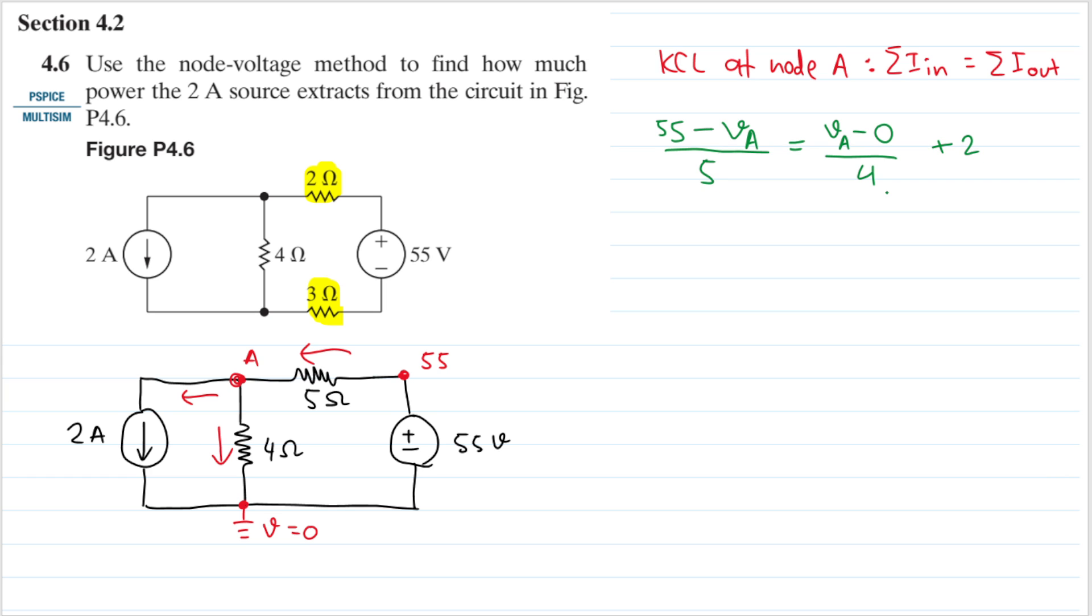I think I want to get rid of this 5 and 4, so we can multiply this by 20. On the left hand side we will have 4 multiplied by (55 minus VA). And VA minus 0 is just VA, but then 4 and 20 will cancel into 5, so we'll have 5 VA, and then plus 2 multiplied by 20, that's exactly 40.